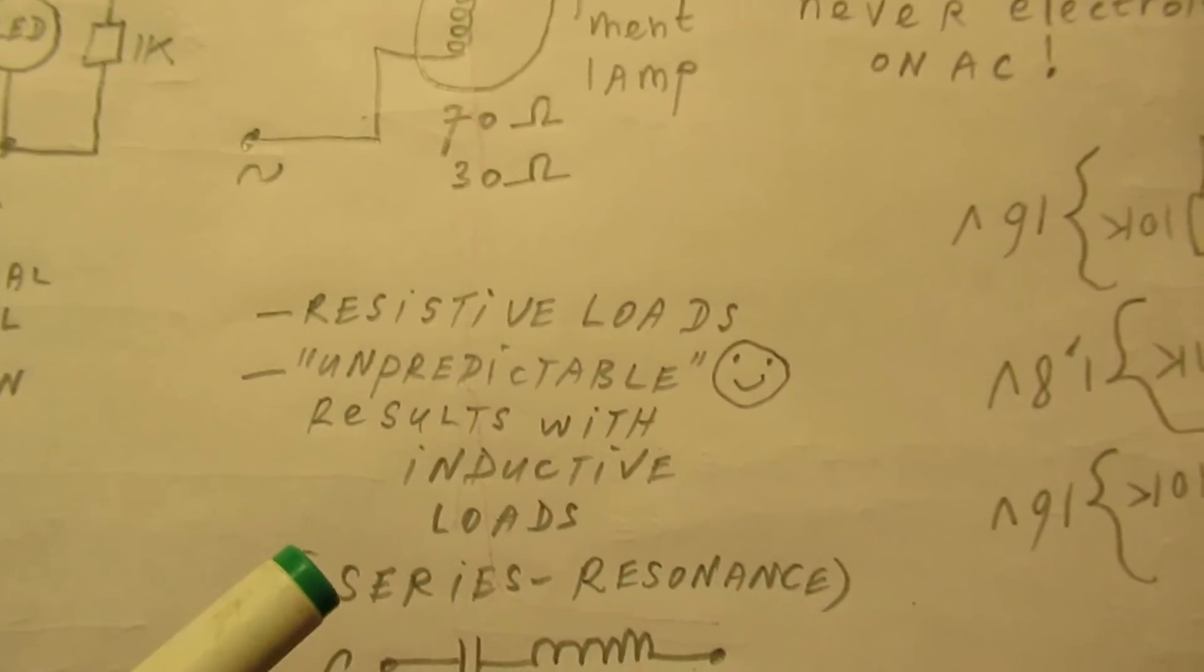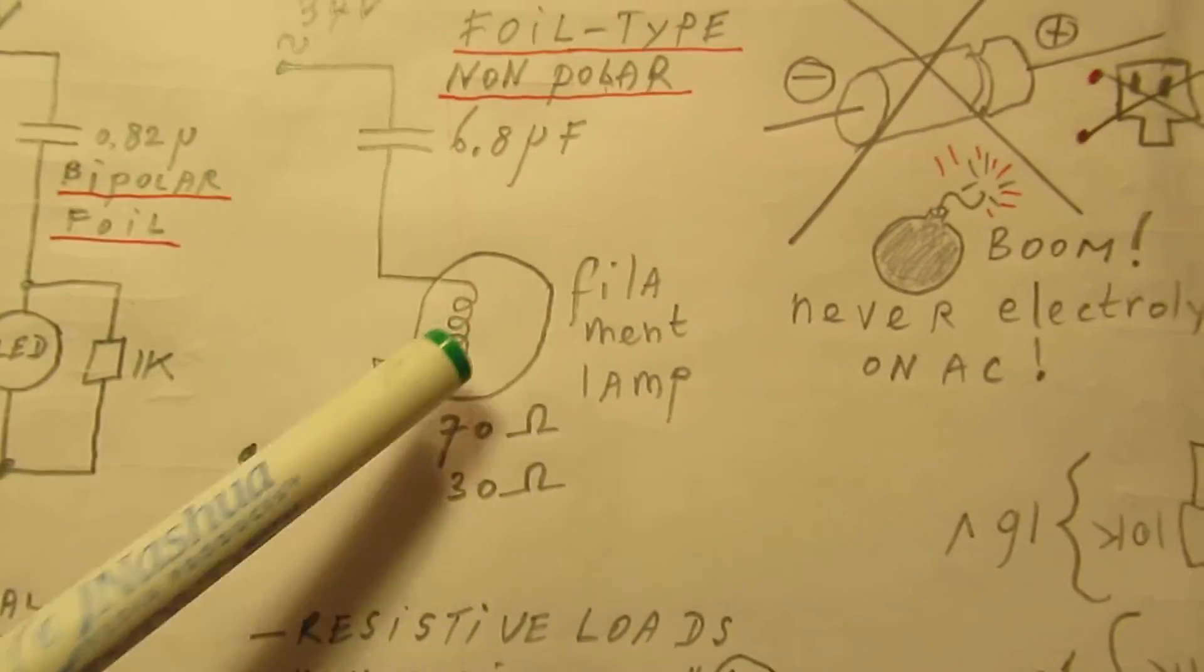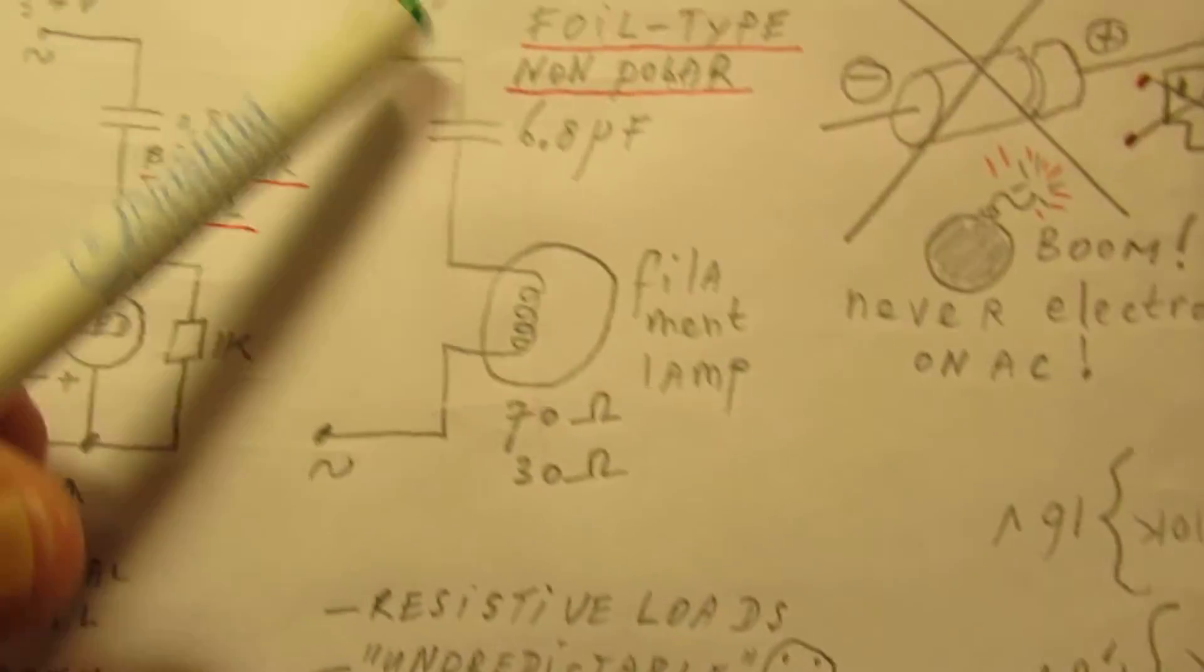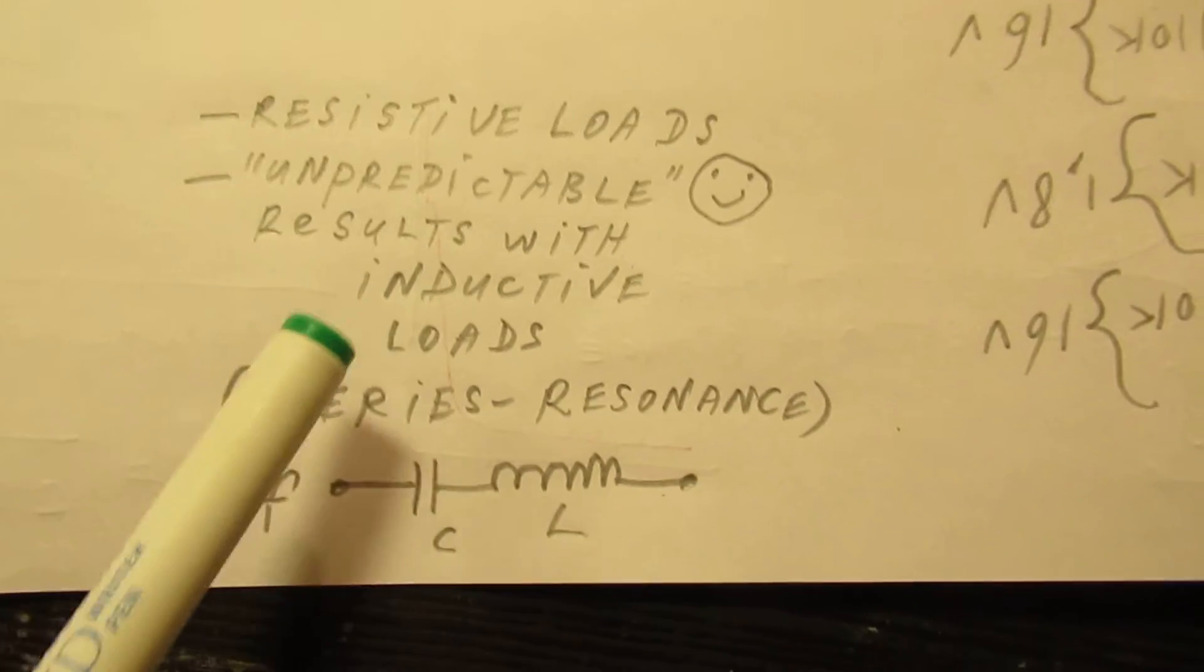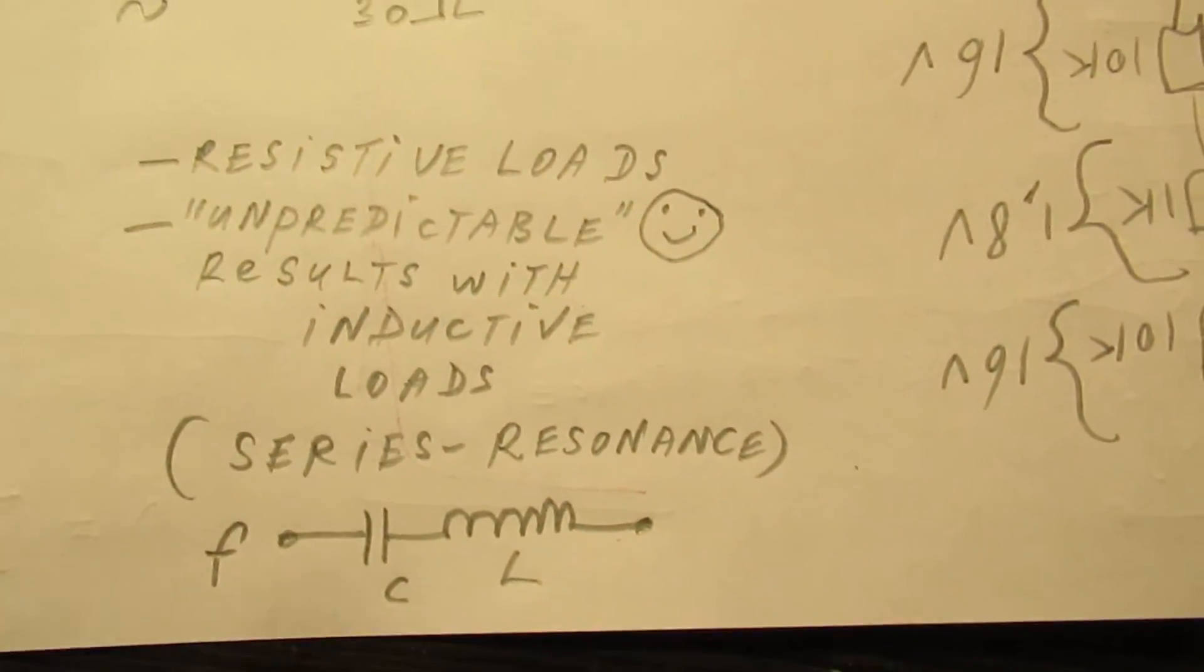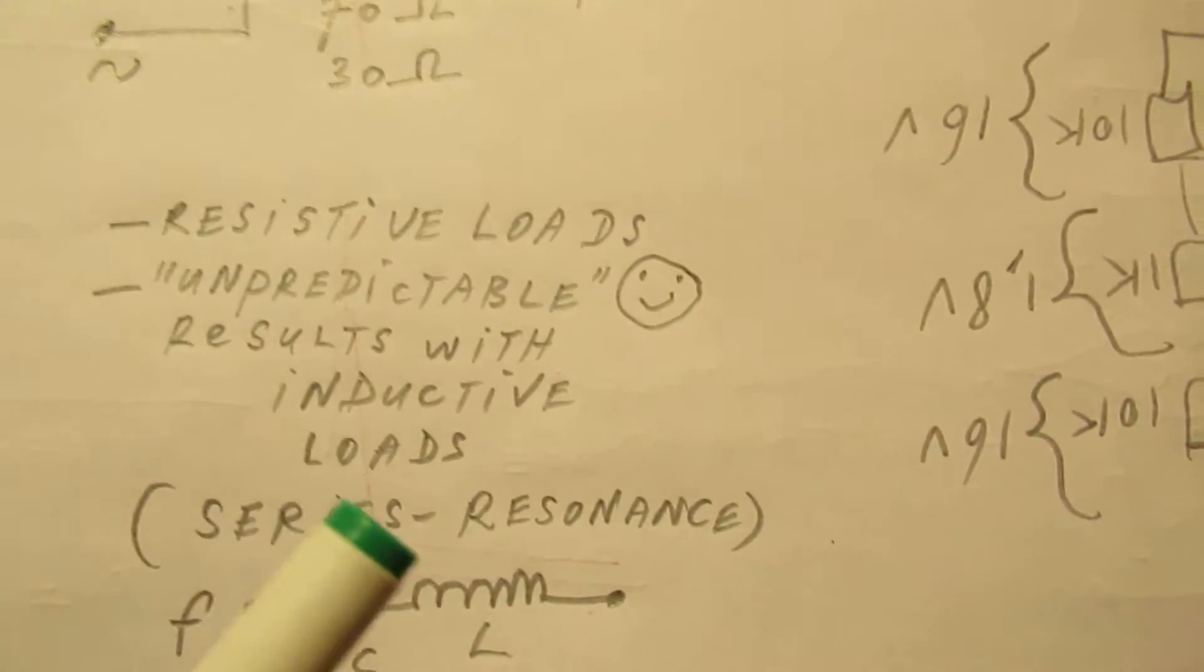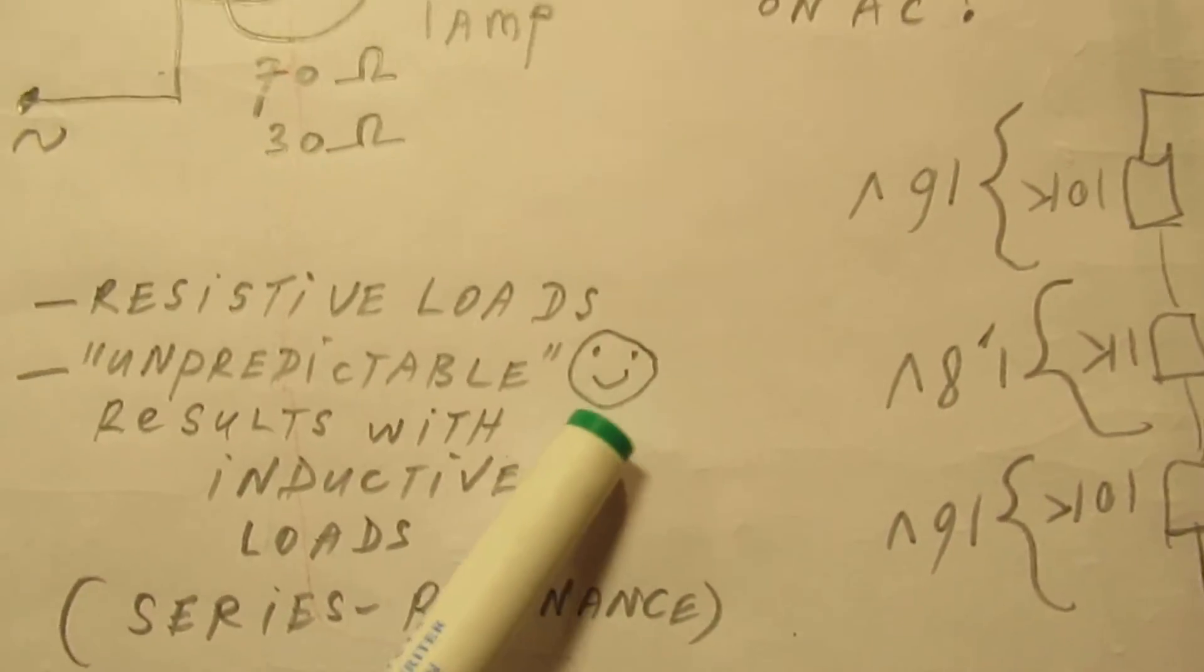When you connect another kind of load, for instance a coil, the whole circuit changes its properties and you get for instance series resonance. That's possible. That's why I've drawn this thing here.